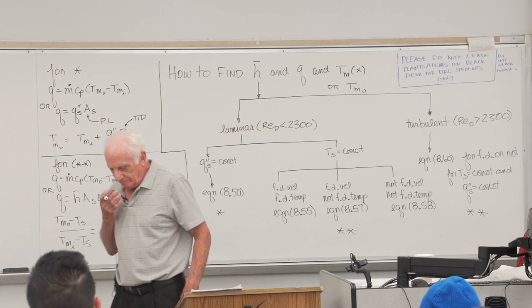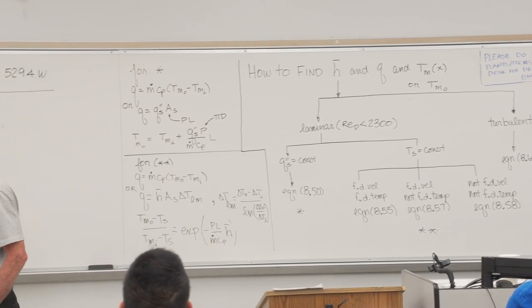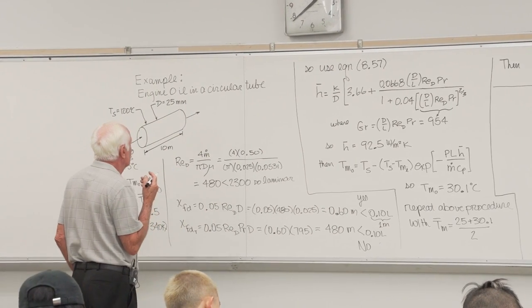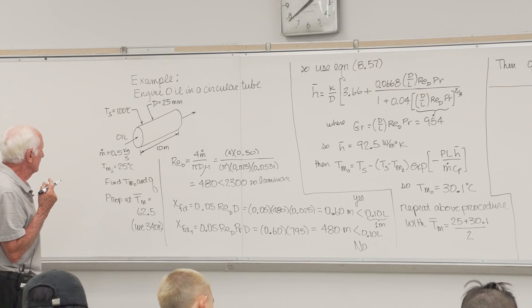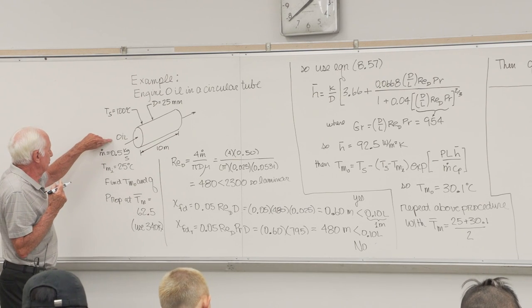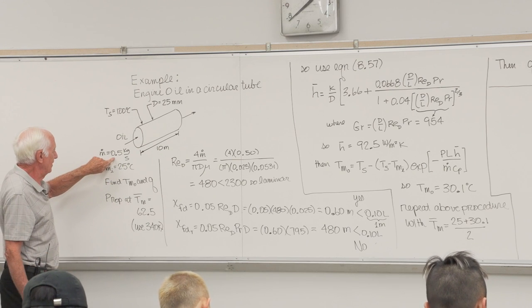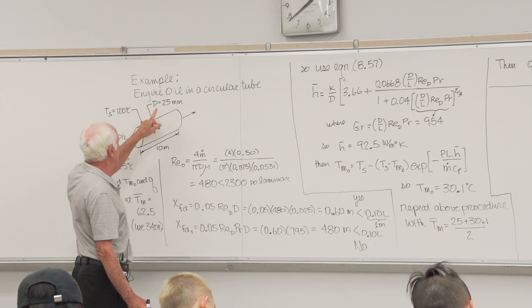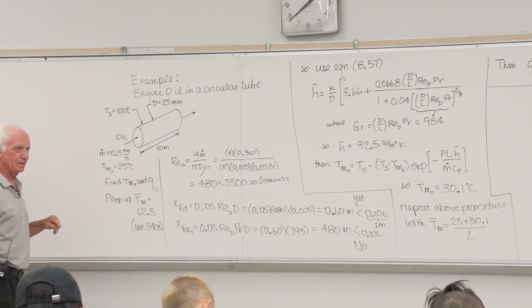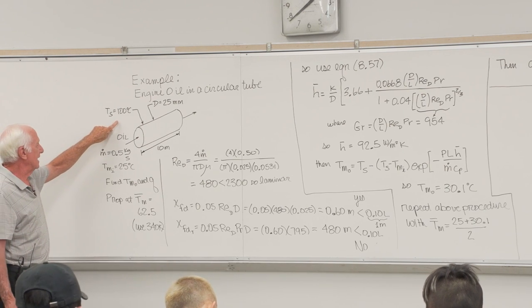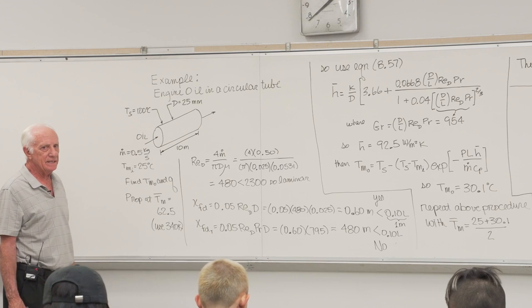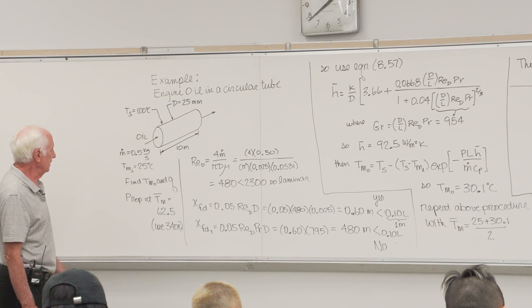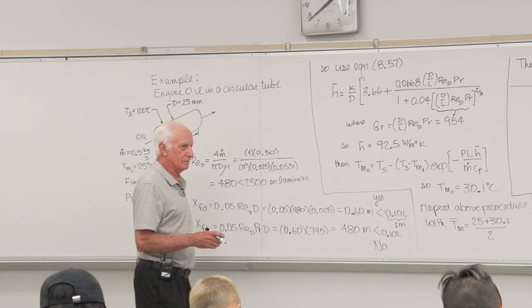Now we look at an example of that. This example is going to be engine oil in a circular tube. The engine oil comes in at 25 degrees C, mass flow rate one half kilogram per second. The tube is 10 meters long with a 25 millimeter diameter. The tube surface temperature is held constant at 100. Find T mean out and Q.